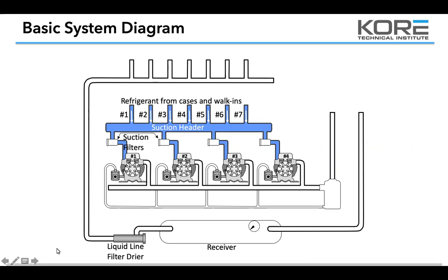We can talk about float strategies another day, but you can get pretty dynamic in how you stage for energy efficiency. All the compressors are tied to the same suction header, so depending on how much heat load is coming in through those lines and raising that suction pressure, transducers on the suction header tell it to bring on stage one. If stage one doesn't bring that suction pressure down to a satisfactory point within a certain amount of time, it ramps stage two, then stage three.